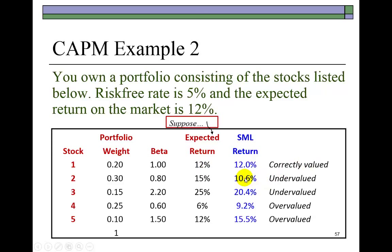Stock 2 is undervalued because the Security Market Line predicts a required yield of 10.6% given its beta, but we're expecting it to yield 15% — that's a good one, you should go for it. Stock 3 is also undervalued — a very good stock — expected to yield 25% when in equilibrium it should only yield 20%. When what you're expecting to earn exceeds what the stock should earn, the stock is undervalued and should be selected. In the cases of stocks 4 and 5, what we expect to earn is below what the stocks should yield, so they should not be selected.